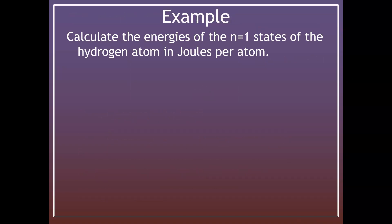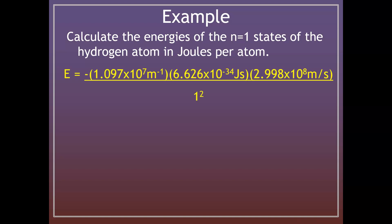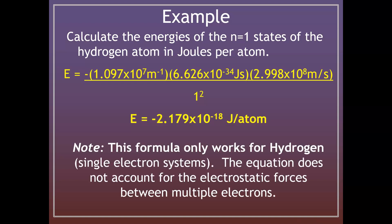Here's an example: calculate the energy of the n = 1 state for the hydrogen atom in joules per atom. You can simplify the top portion of the equation since those constants are already multiplied, then divide by one squared. The result is −2.179 × 10⁻¹⁸ joules per atom. Note this formula can only be used for hydrogen, because it doesn't account for repulsive forces that occur between multiple electrons in multi-electronic systems.